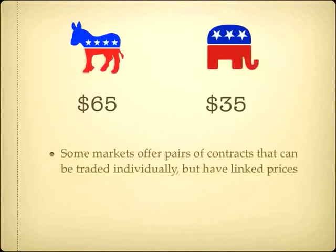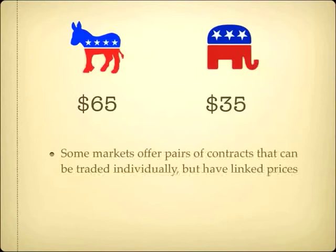If people think there's a 65% chance that Obama is going to win, then they think there's a 35% chance the other guy will win. Sometimes you have individual contracts that are traded and priced separately, but their prices are connected.